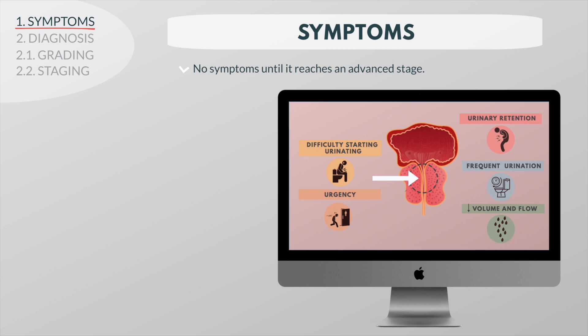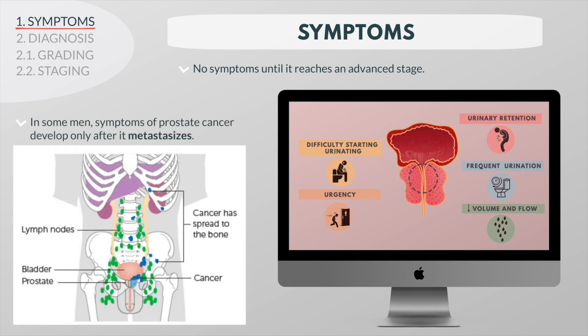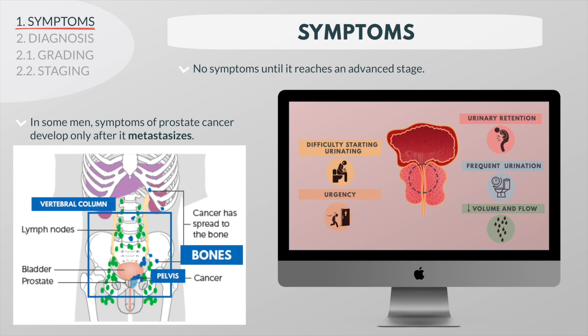Later, prostate cancer may cause bloody urine or a sudden inability to urinate. In some men, symptoms of prostate cancer develop only after it metastasizes. The areas most often affected by cancer spread are the bones, typically the pelvis, the vertebral column, or the ribs.